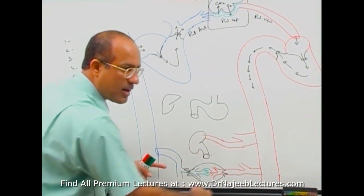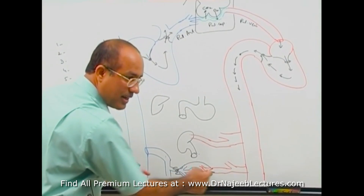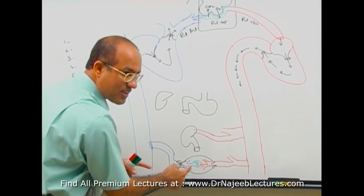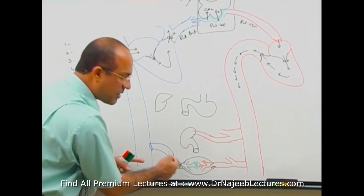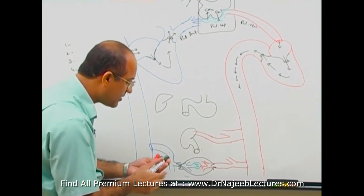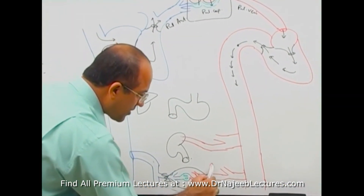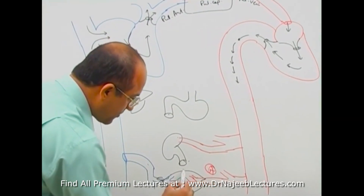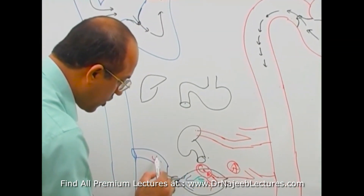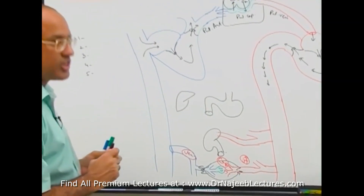What is the simple rule? Systemic arteries bring the blood, then there are systemic capillaries, and then blood drains by systemic veins. This is the normal arrangement of artery, capillary, and vein. In some parts of the body, this is changed.